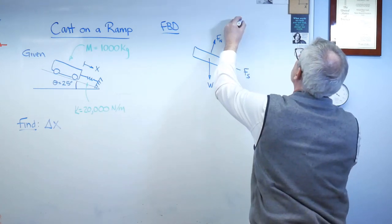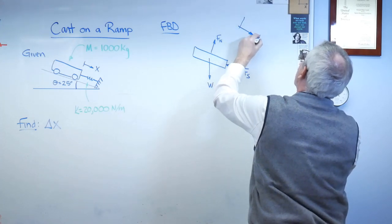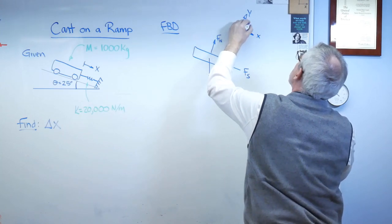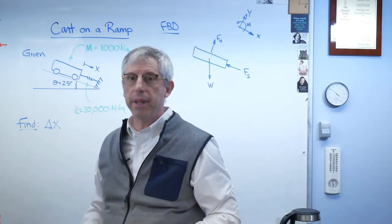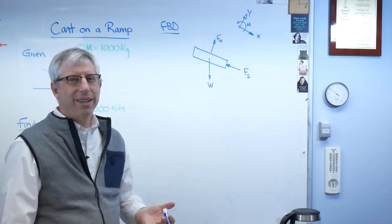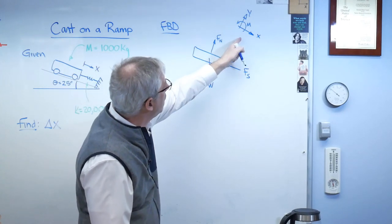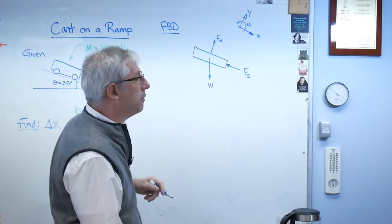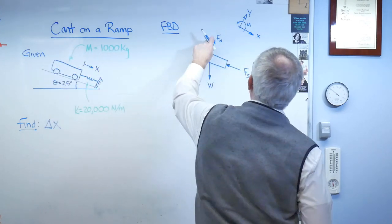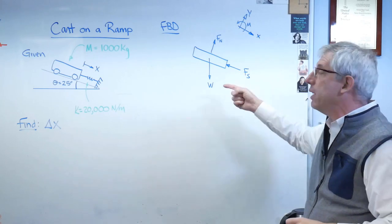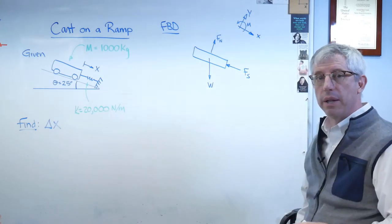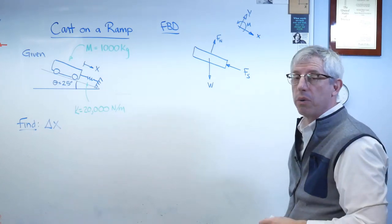In this one, it turns out to be pretty handy if you make one of the axes parallel to the ramp. There's our positive sign convention. Does it have to be that? Absolutely not. Any legitimate sign convention you can make work. It's just how much work are you going to have to do? If you use this so that x is parallel to the surface of the ramp, everything gets easier. So, normal force is in the y direction. The spring force is in the negative x direction. The only objectionable one here is weight.